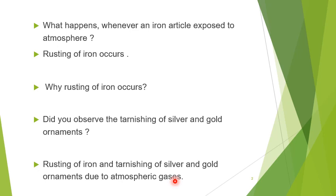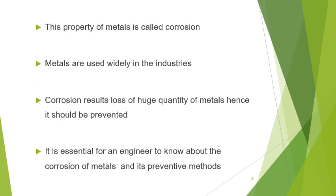Rusting of iron or tarnishing of silver and gold ornaments is due to atmospheric gases. Because iron, silver, or gold ornaments are placed in the atmosphere, and some gases present in the atmosphere cause the rusting of iron or tarnishing of silver and gold ornaments. So what does corrosion mean? Properties like rusting of iron and tarnishing of silver and gold ornaments are called corrosion — the property of metals is called corrosion.